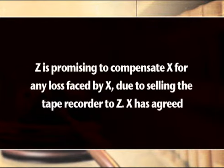For example, there is a contract between X and Y according to which X has to sell a tape recorder to Y after three months. On the next day of their contract, Z insisted on selling the same tape recorder to him. Z promised to compensate X for any loss faced by X due to selling the tape recorder to Z. X agreed, and the contract formed between X and Z is called an indemnity contract, where Z is the indemnifier and X is the indemnity holder.